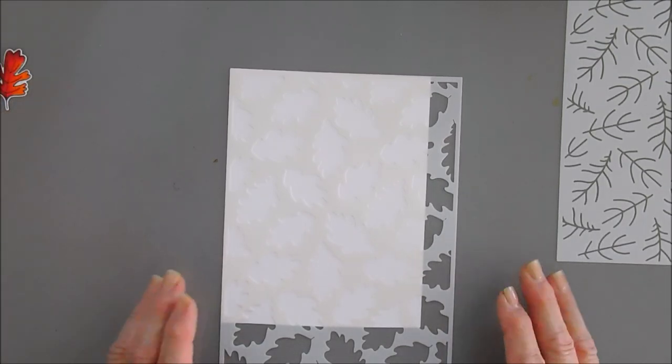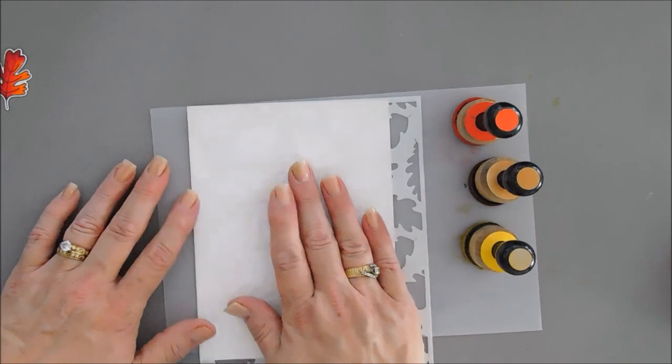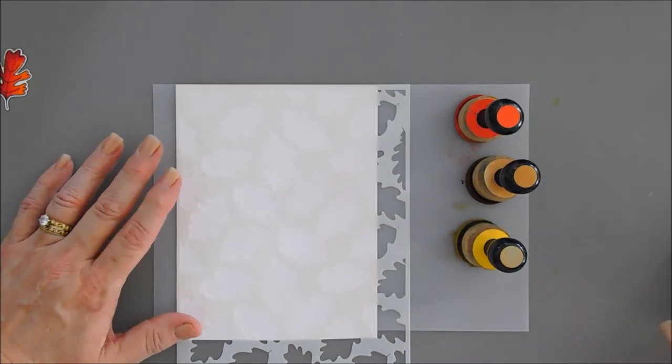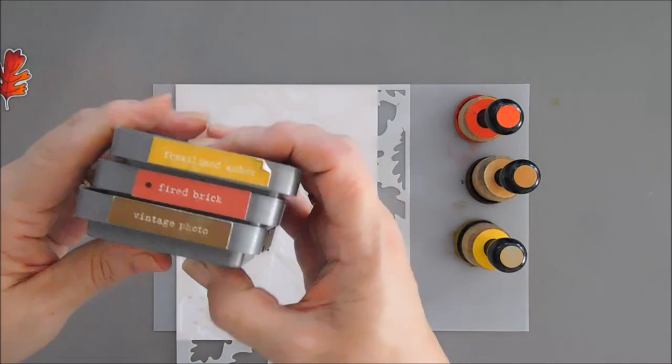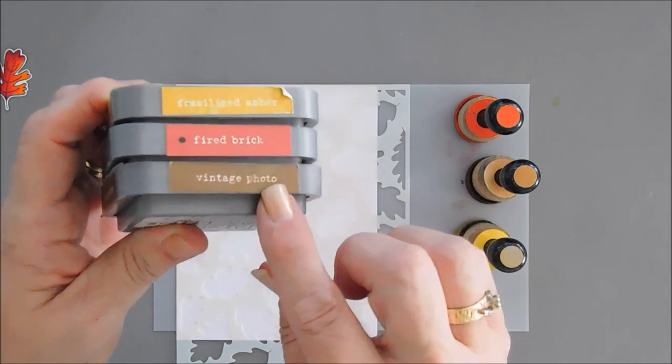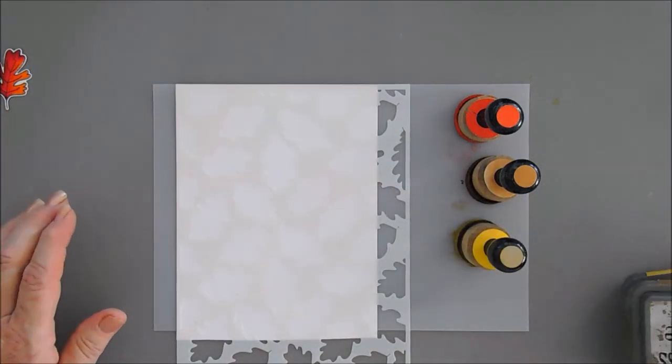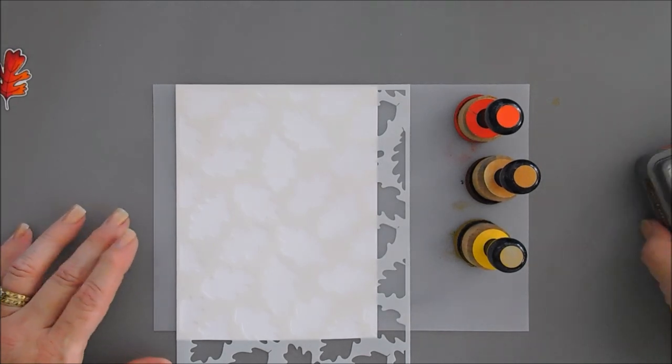I brought in my craft mat and the colors that we're going to be using are yellow, red, and brown. Kind of went out of order there. And we'll start with our yellow first because the other colors can blend in with our brown and with our yellow.